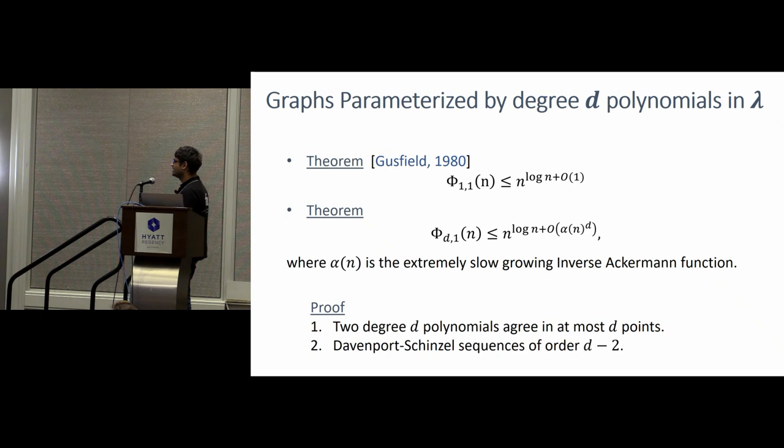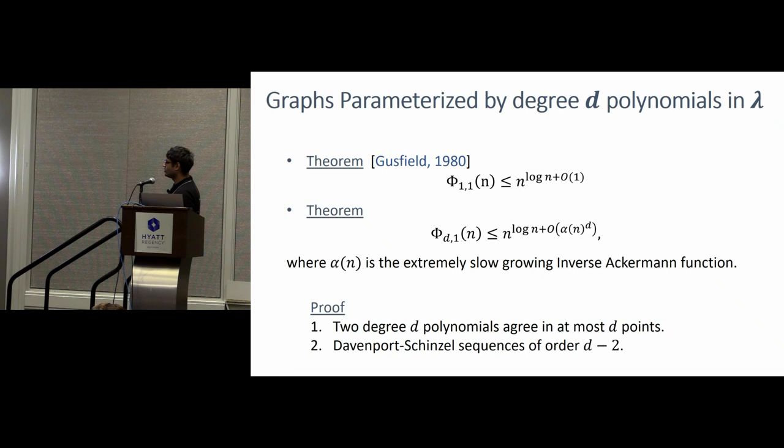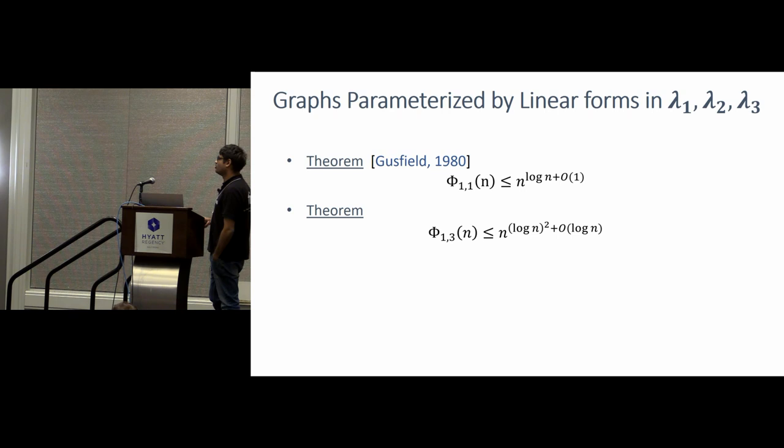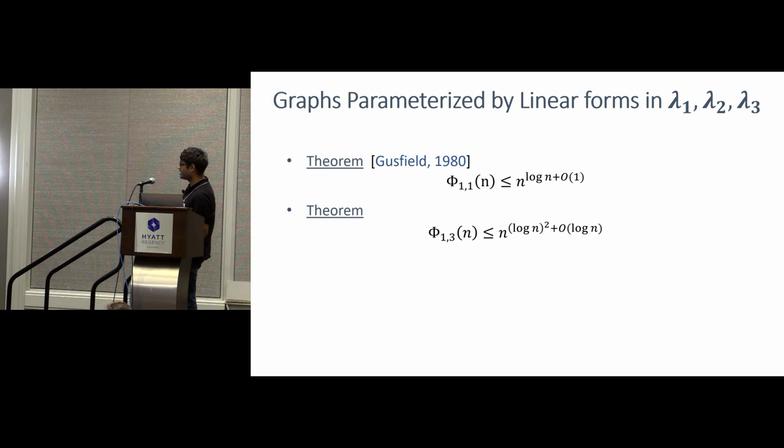And the proof is quite simple. We use something called Davenport-Schinzel sequences, and it uses the fact that, of course, these sequences, the paths are no longer alternation free, but the number of alternations are limited by the degree of the polynomial. One more result is, what if there are, there is more than one variable. Suppose there are two lambdas. If there are two lambdas, then turns out it's the same as one lambda. If there are three lambdas, then the problem becomes a little non-trivial, and we show that the n raised to log n becomes n raised to log square n.